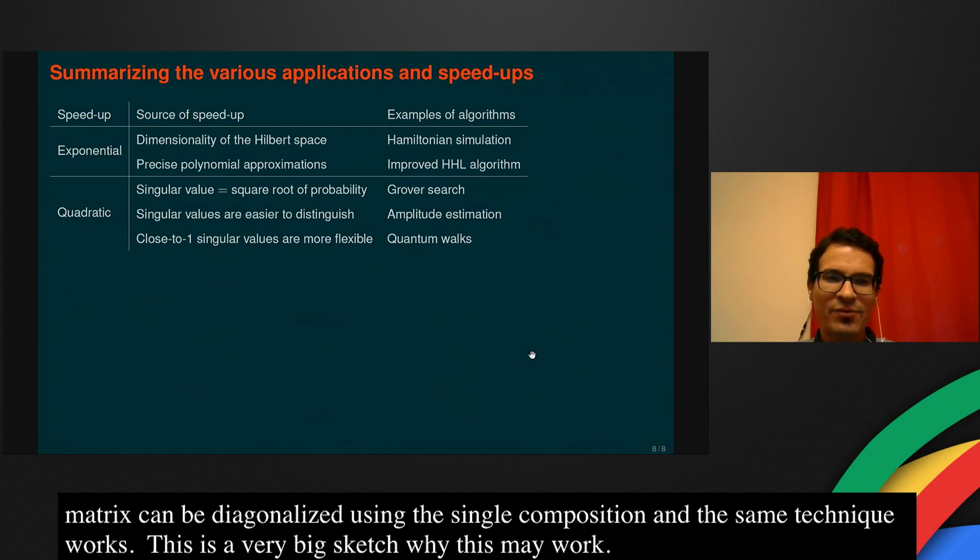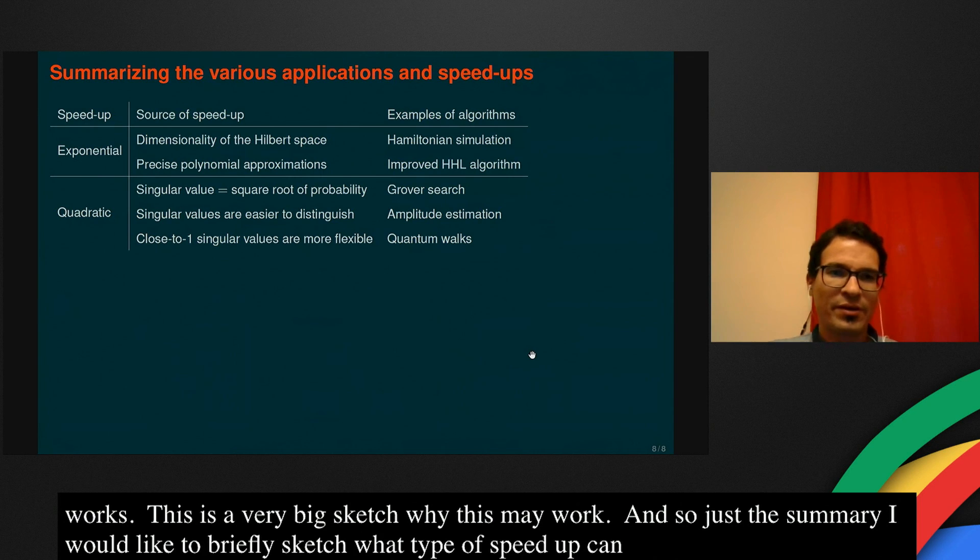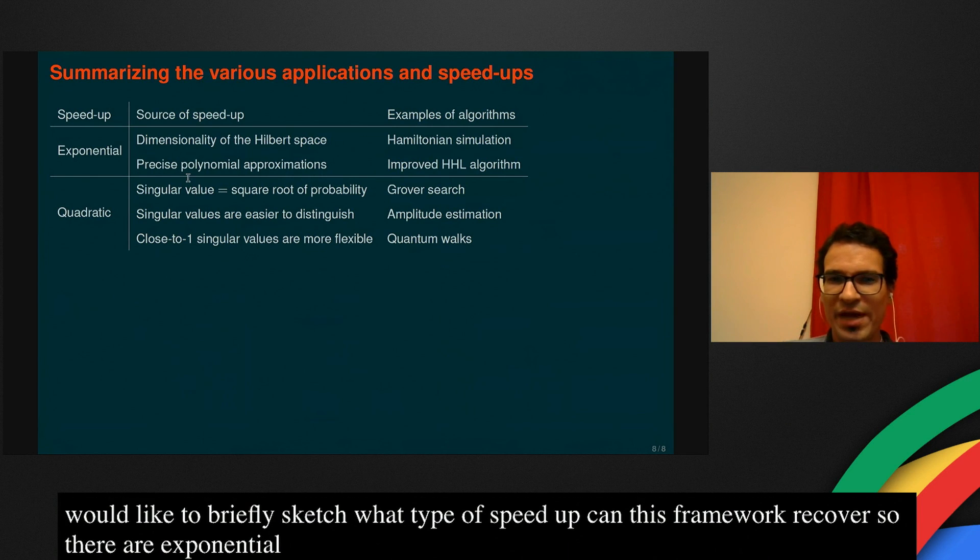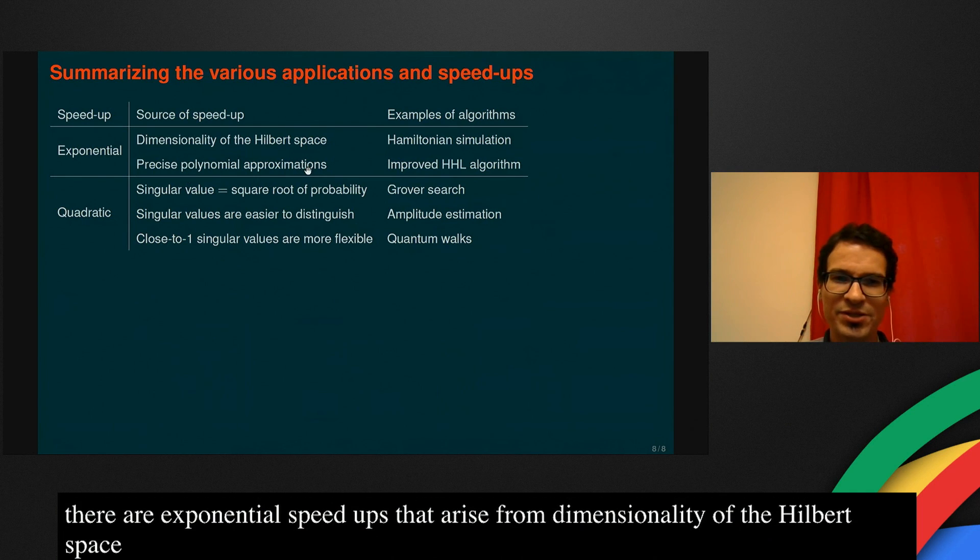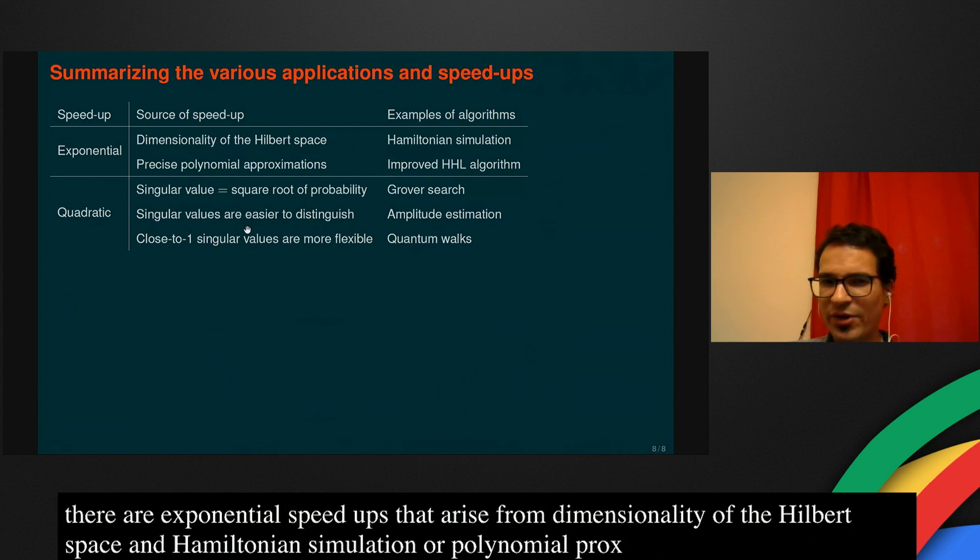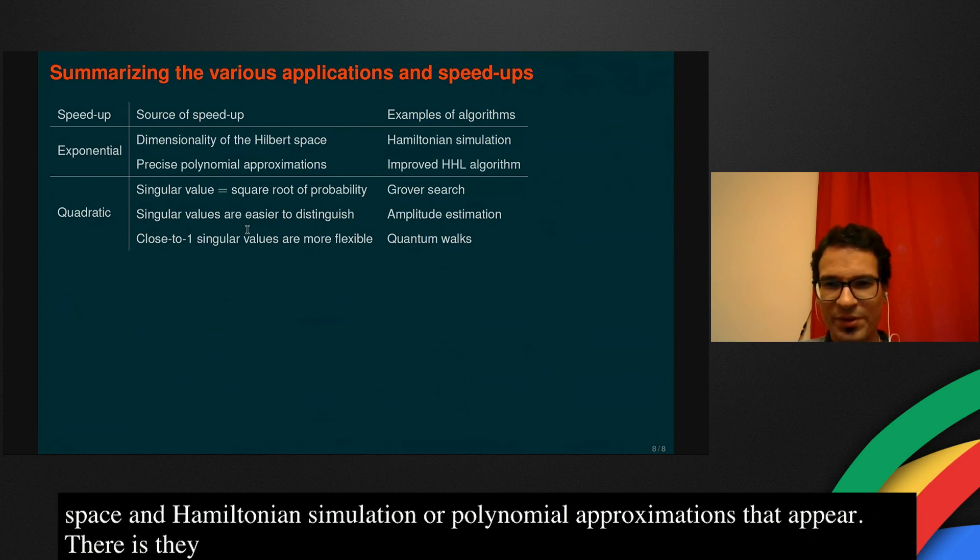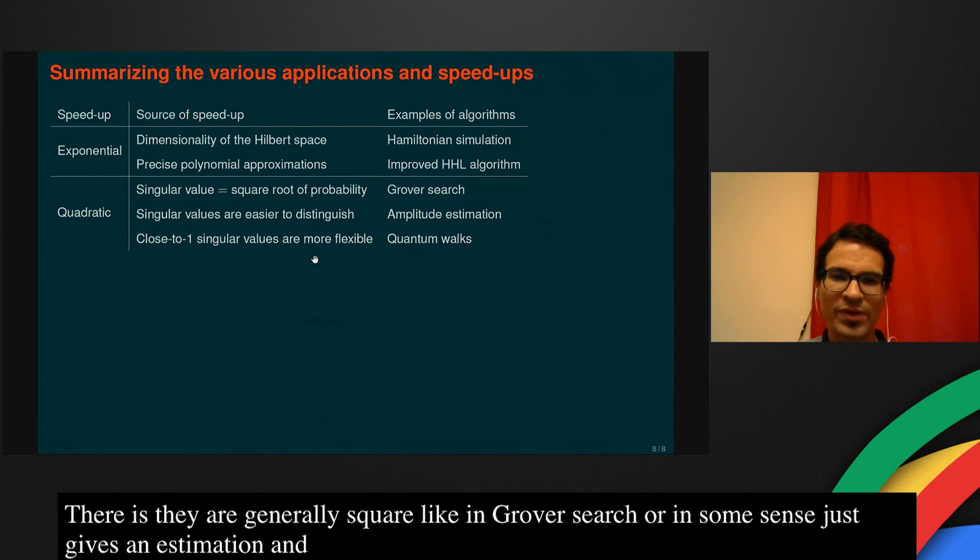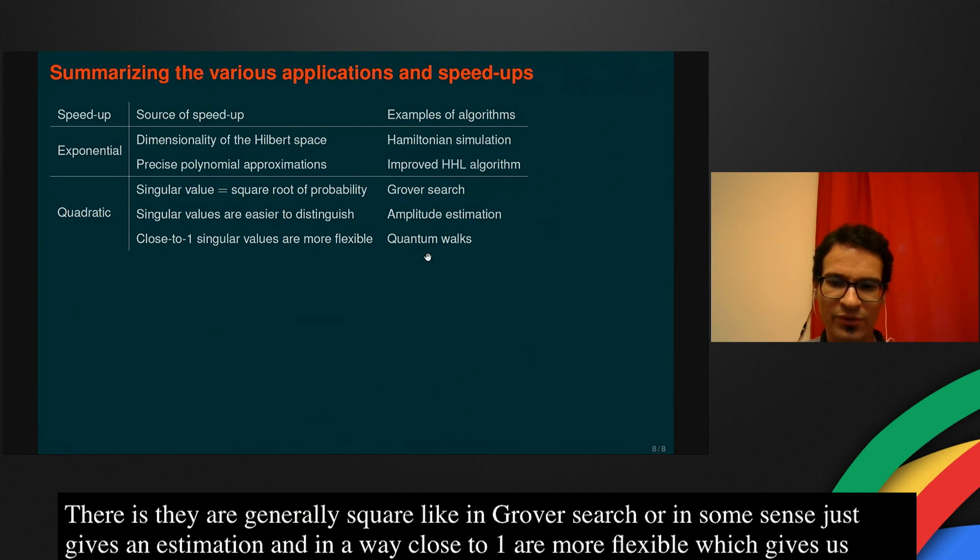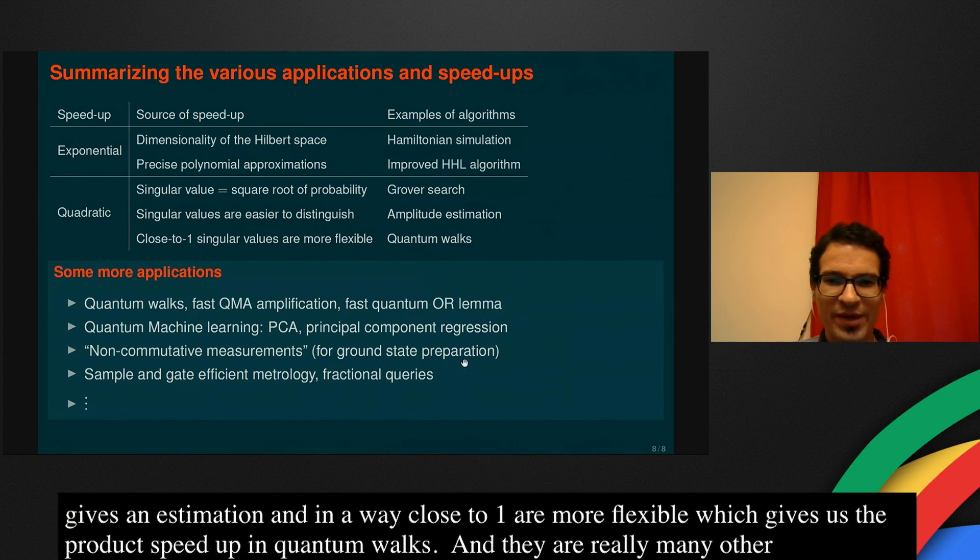Just as a summary, I would like to briefly sketch what type of speedups can this framework recover. There are exponential speedups that arise, for example, from the dimensionality of the Hilbert space, which appear in the Hamiltonian simulation algorithms, or from precise polynomial approximations that appear in improved HHL algorithm, for example. There are quadratic speedups, which stem from the fact that singular values are, in general, the square roots of the probabilities, like in Grover's search, or singular values are easier to distinguish in some sense, which gives rise to amplitude estimation. And in a way, close to one singular values are more flexible in this technique, which gives rise to the quadratic speedup in quantum walks. And there are really many other applications, but for the sake of time, I would like to stop here.